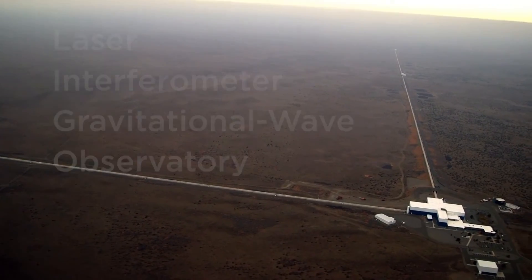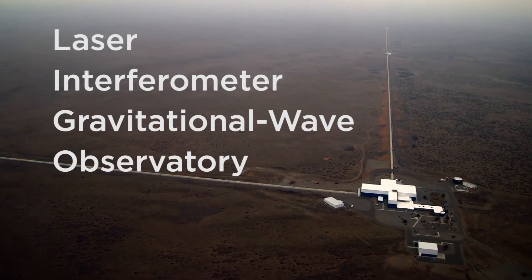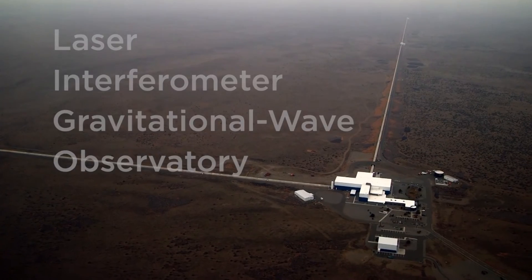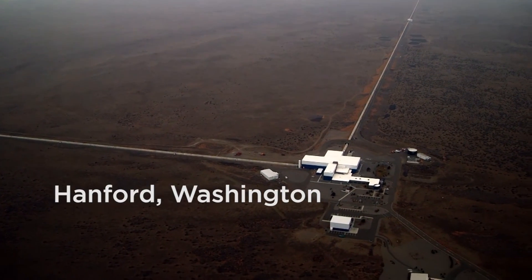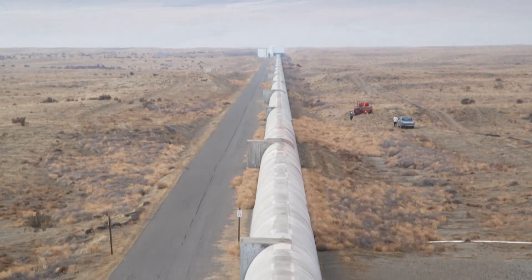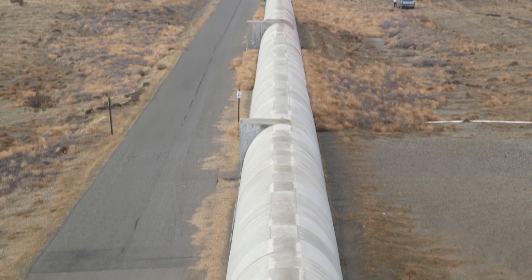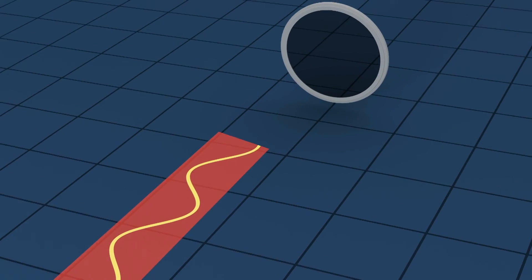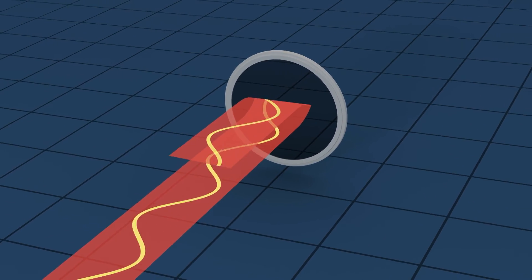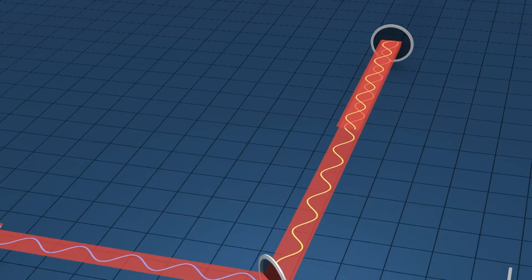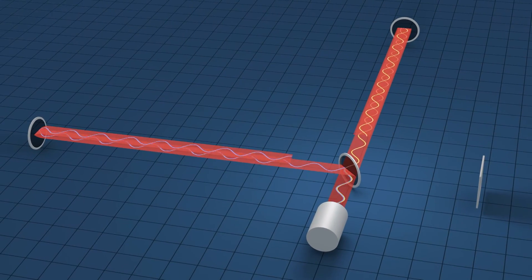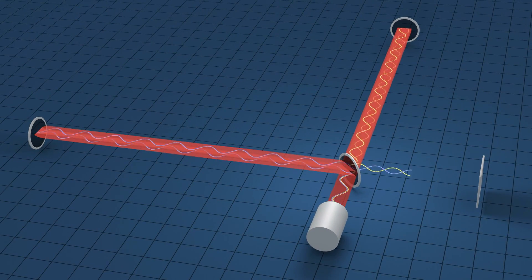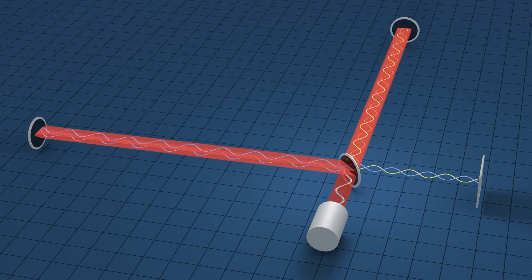What is the technique used to detect gravitational waves? For this discovery, the technique is the one of laser interferometers. The principle of operation is quite simple. The light coming from a laser is divided by a beam splitter into two perpendicular arms, and then there is a mirror at the end of each arm which bounces back the light, which recombines at the photodetector.